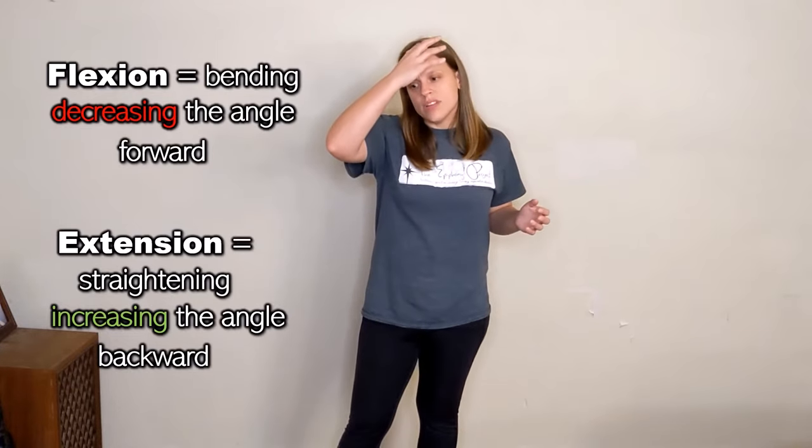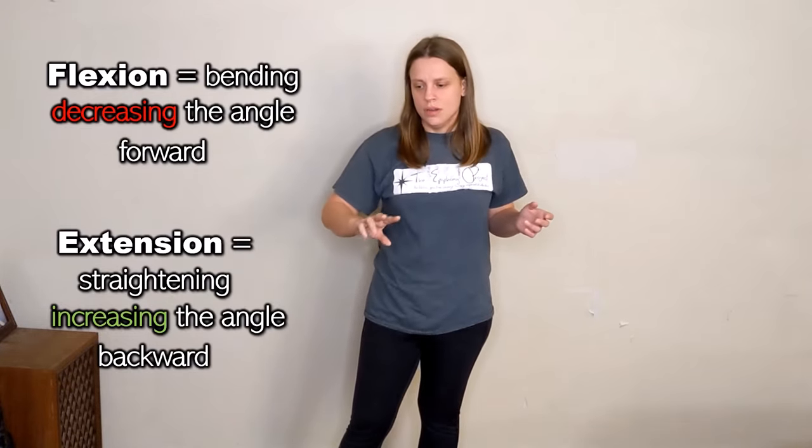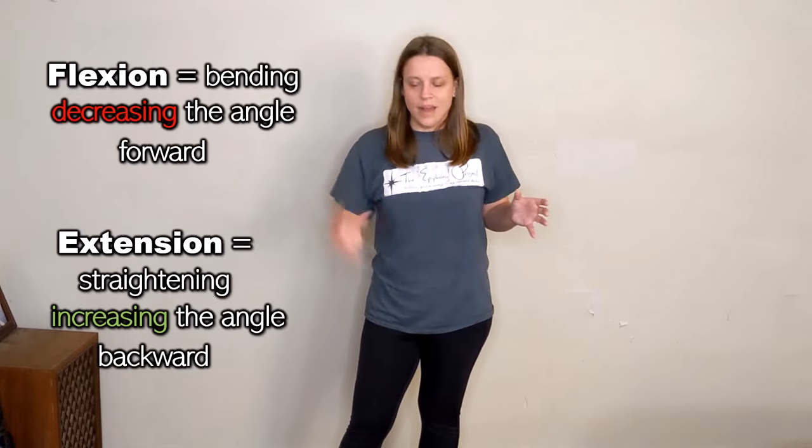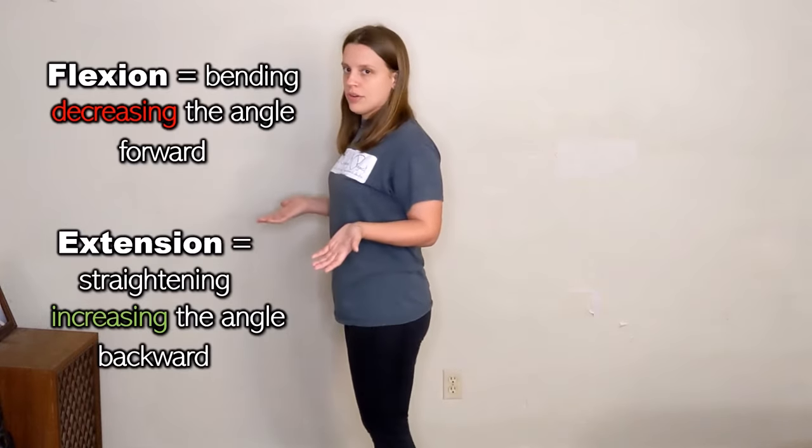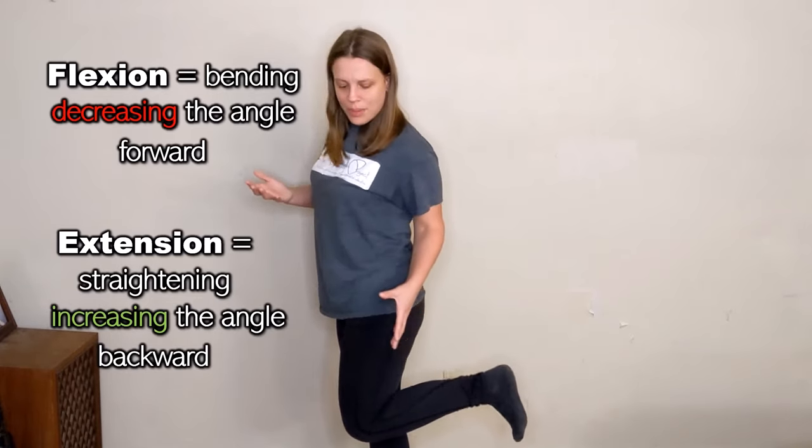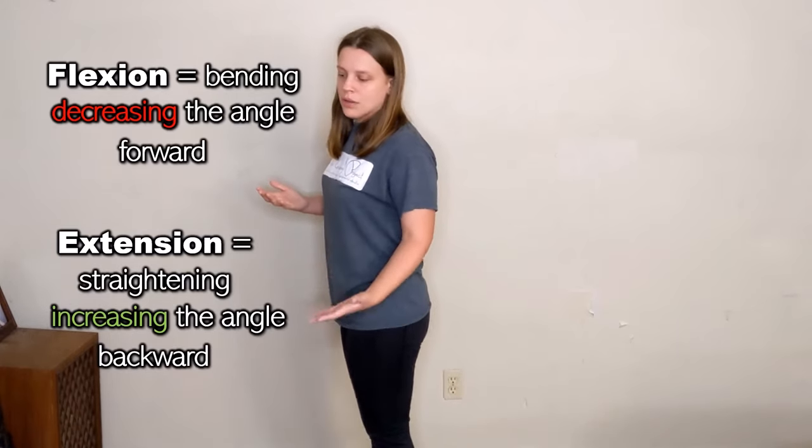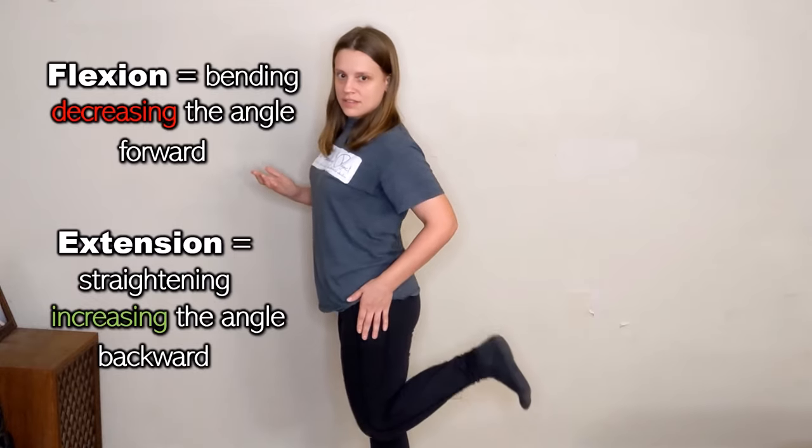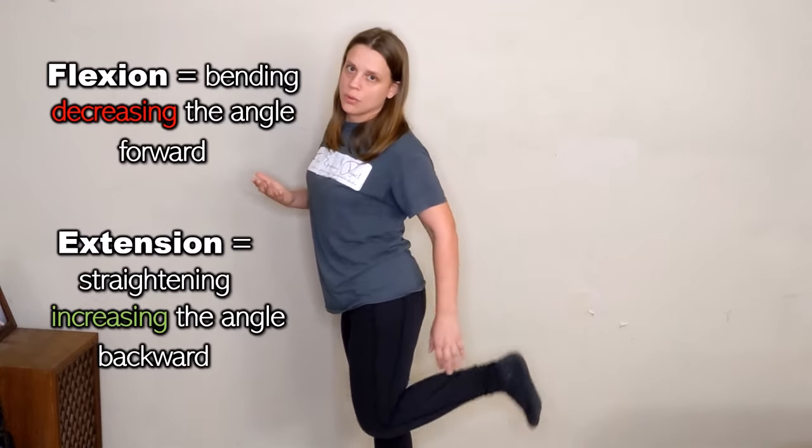So really the only time that extension is not forward is with your knee because your knee is sort of on backwards. But when you're flexing the knee, you are making the angle smaller.